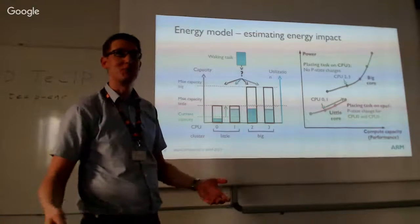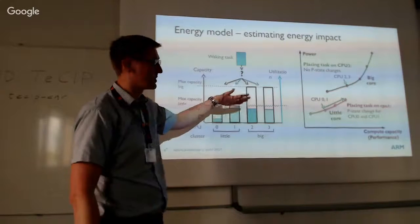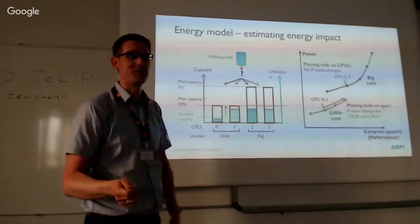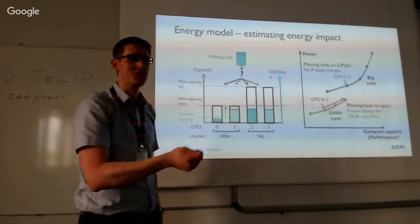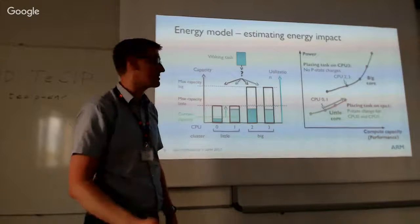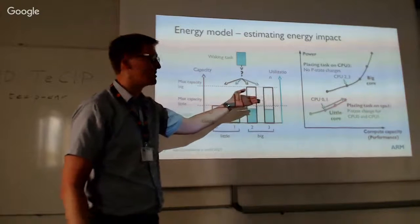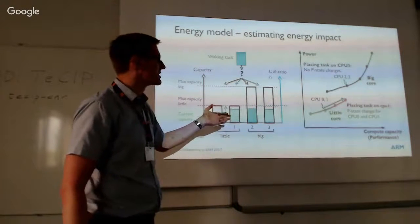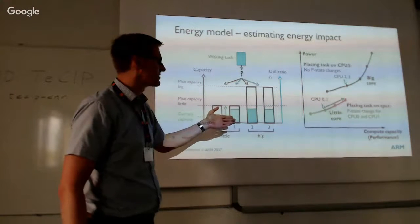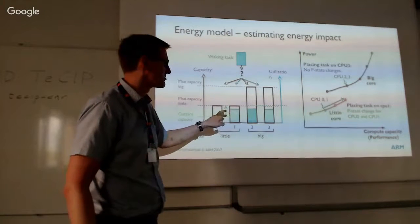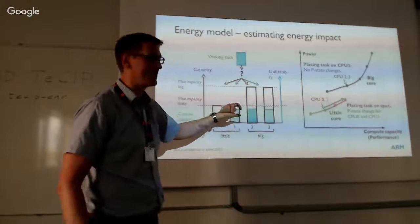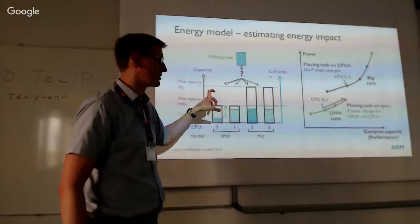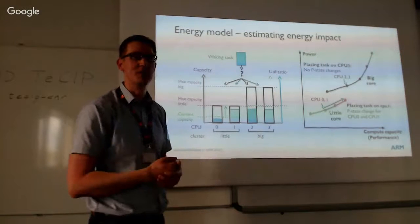When a task wakes up, we look at its utilization and the current landscape of how busy the other CPUs are. We try to narrow down the search space using heuristics because trying all CPUs is too expensive — computing those energy numbers isn't cheap, especially in the wake-up path. So we come up with a few candidates, do the full energy model evaluation on those, and pick the better choice.